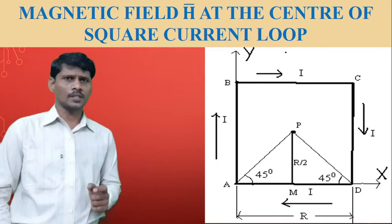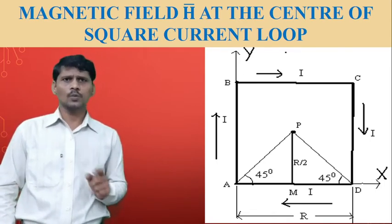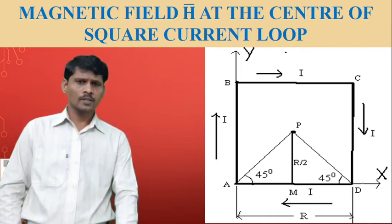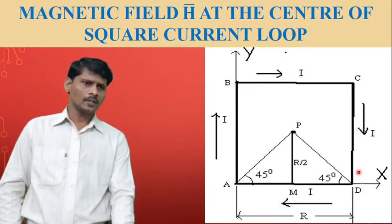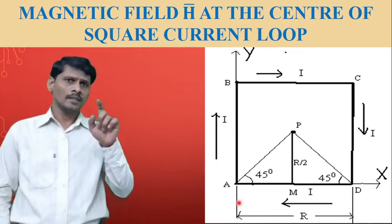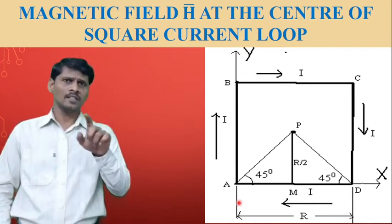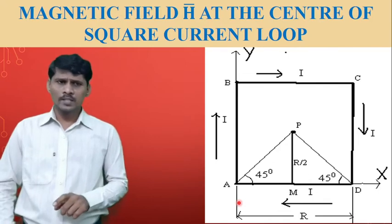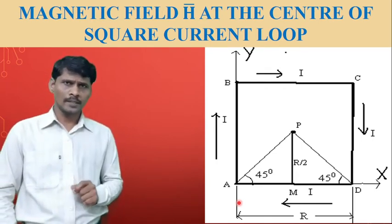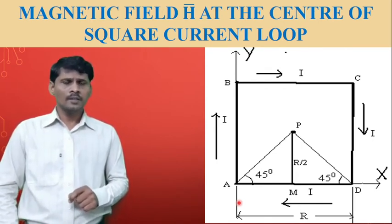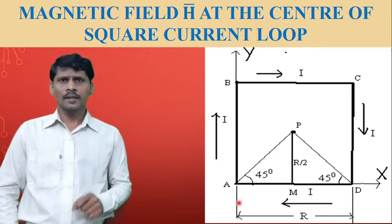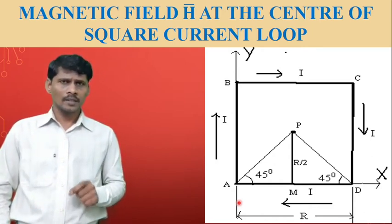In this application, the current-carrying conductor is arranged in the form of a square loop, with sides A to B, B to C, C to D, and D to A. The current-carrying conductor is arranged in a clockwise direction. The square loop is placed in the z=0 plane, that is the xy-plane, and I is the direct current flowing in the clockwise direction.